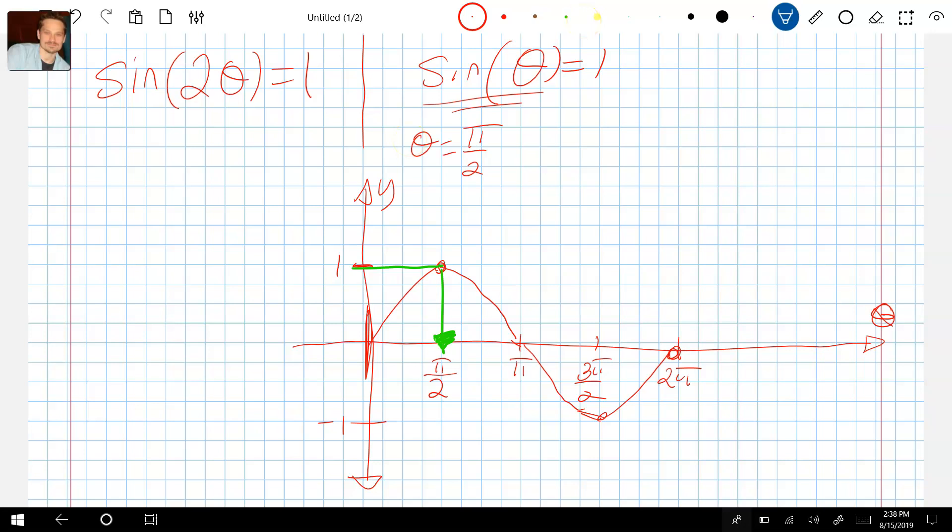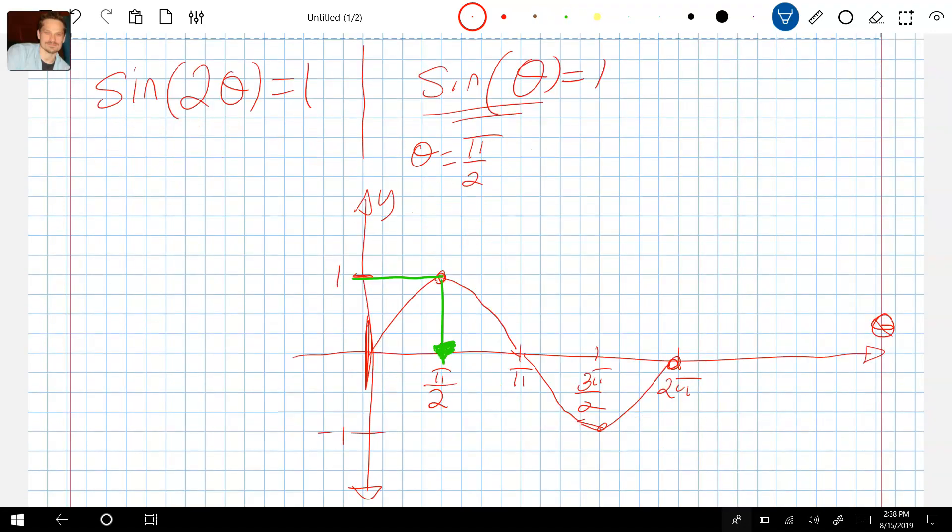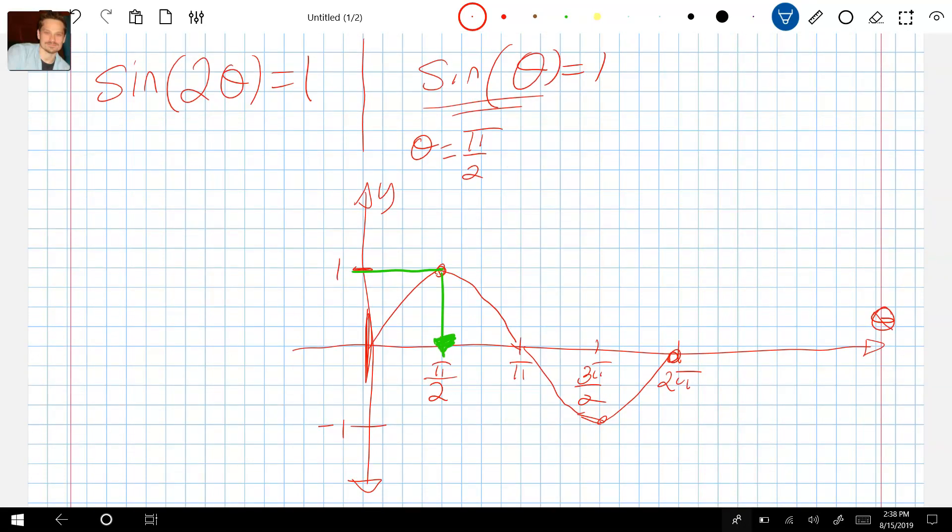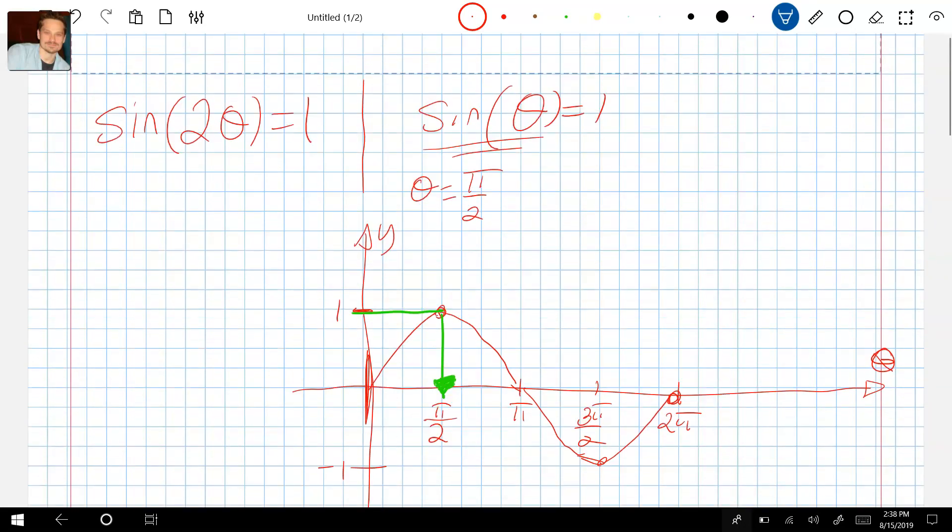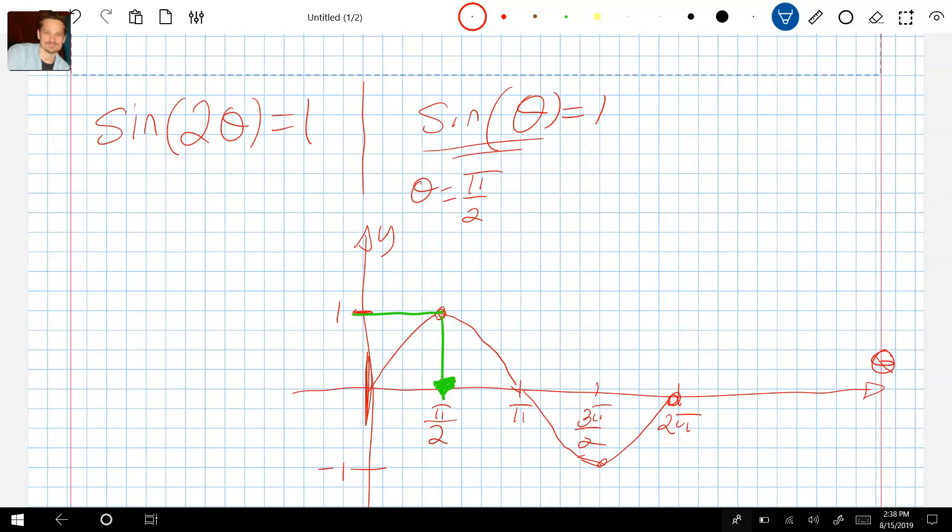But then the question is, what happens with sine of 2 theta equals 1? That's a little bit different. Remember that for the basic sine of theta equals 1, for the basic sine function over here, this is the period, correct? It's from 0 to 2 pi. When you multiply the angle by a number, you're changing the period, which means all the solutions to an equation like this are also changed.